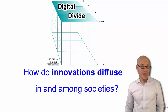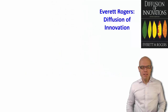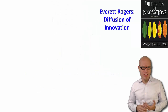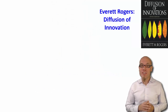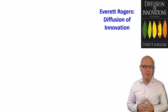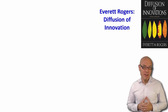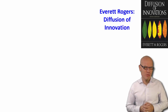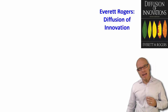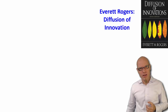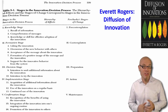How do innovations diffuse in and among societies? The basic body of literature here is referred to as the diffusion of innovations, and the big reference work is from the communication scholar Everett Rogers, one of the most cited communication scholars. He tells us that on the individual level you can distinguish among five different stages.